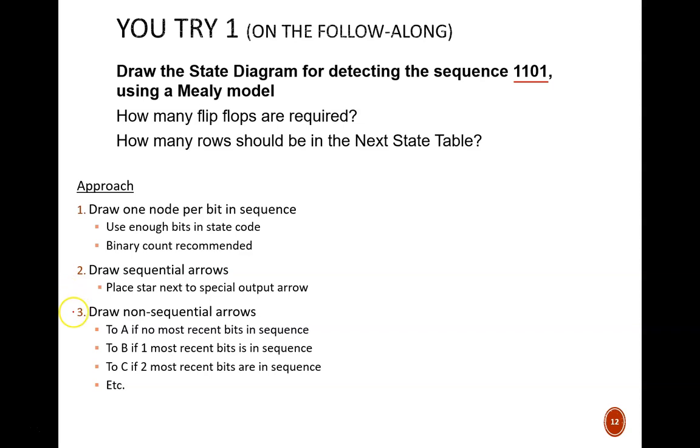These are the easiest since they should move in order from A to B to C to D. Finally, draw the non-sequential arrows. These require extra consideration according to these guidelines. Recall that node A indicates no recent bits follow the sequence. Node B indicates that the one most recent bit follows the desired sequence. And so on. With this in mind, try your hand at drawing the state diagram and answering these two questions. Pause the video while you do.